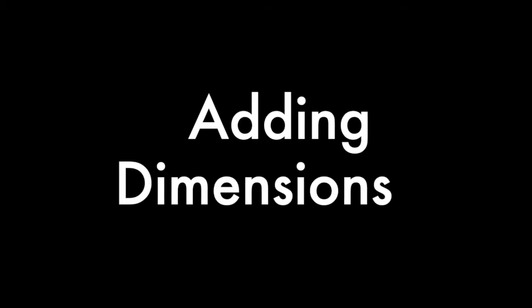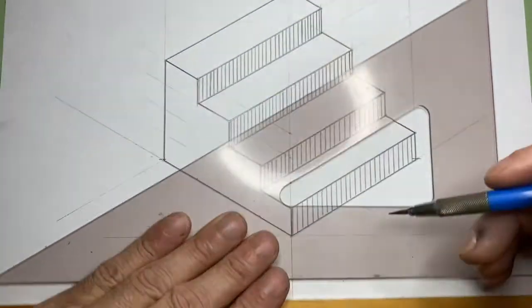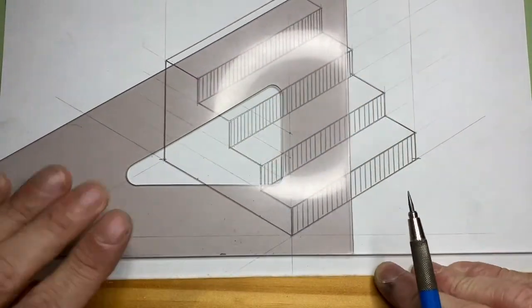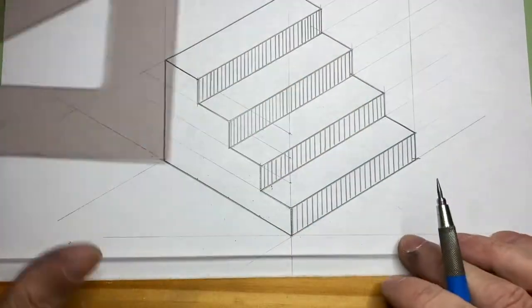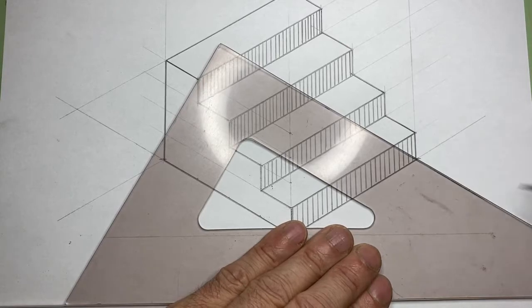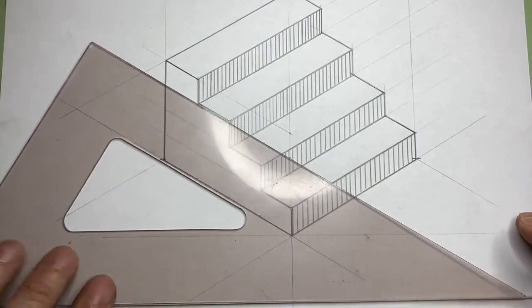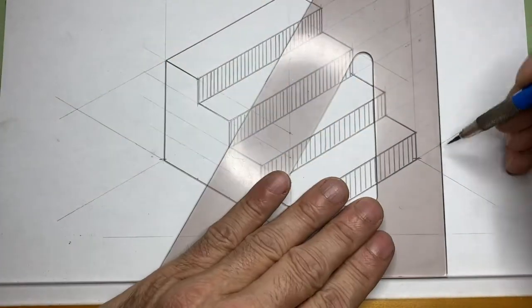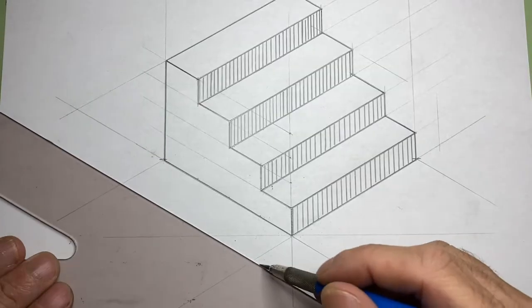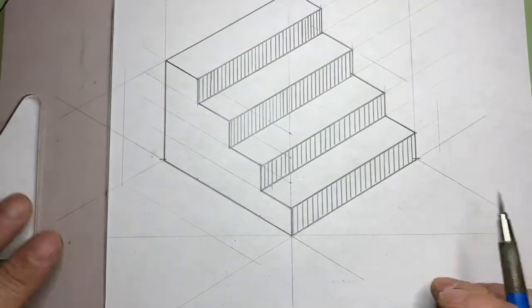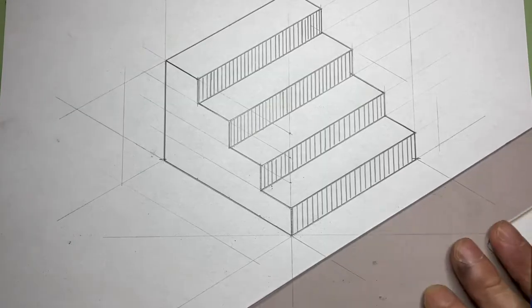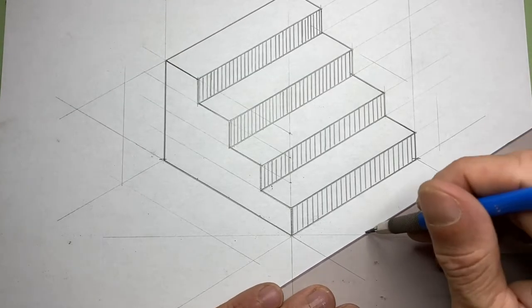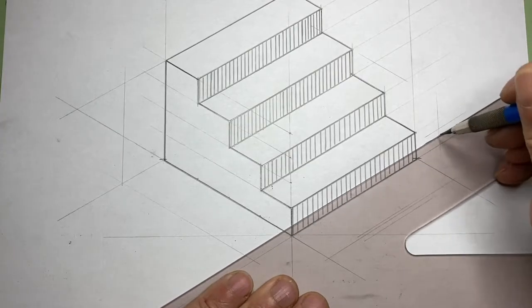All right, let's add some dimensions. We'll add five measurements to this drawing. To begin, we'll lightly draw in some extension lines and some dimension lines. I'll also add some guidelines for my dimensions.